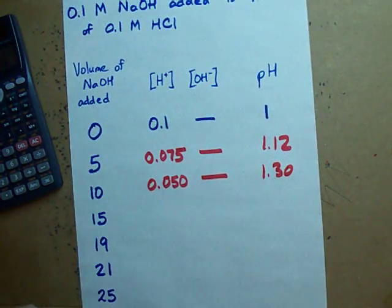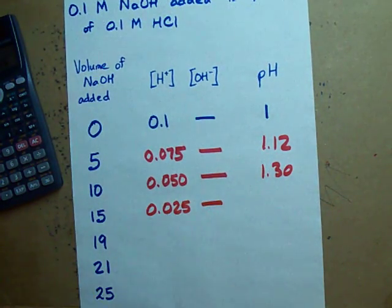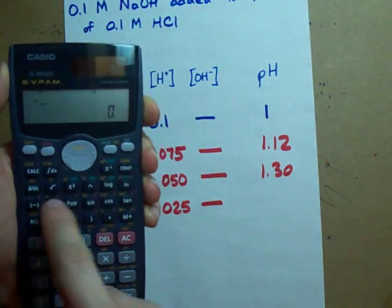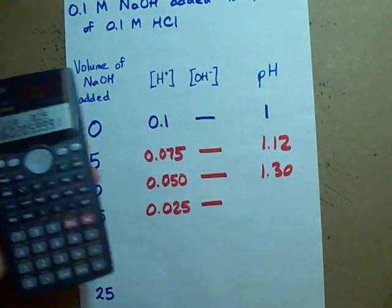If I add 15, I've titrated away three quarters of my acid. Still no OH-, but my pH has risen to negative log of 0.025, 1.6.